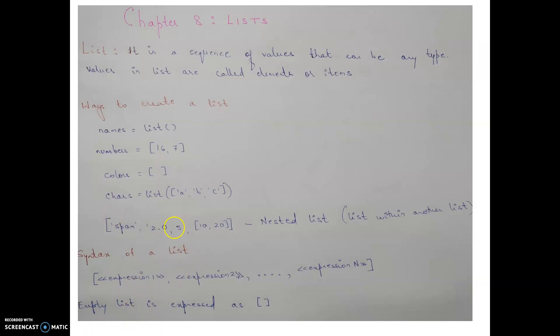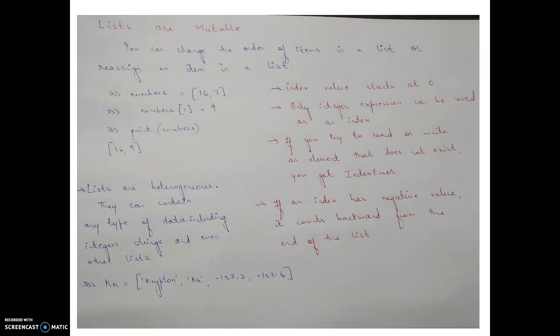The syntax of a list uses square brackets, and an empty list is expressed as empty square brackets. Lists are mutable. What we mean by mutable is that you are able to change the order of items or reassign items in a list. Note that string data types are immutable — you can't reassign any character in a string. Here we have a list called 'numbers' which contains 16 and 7.